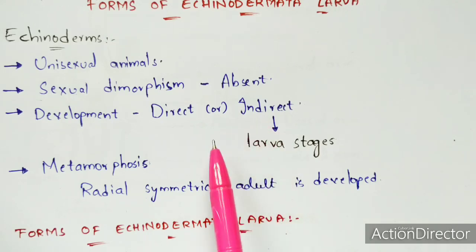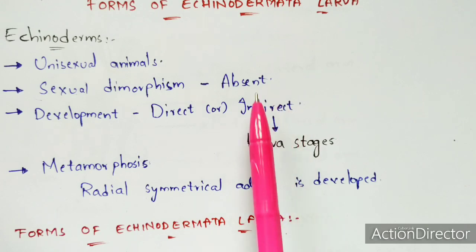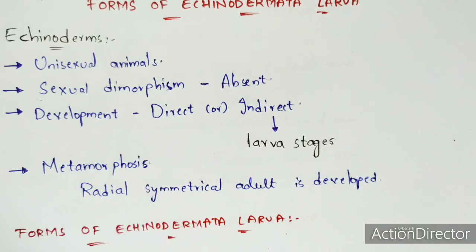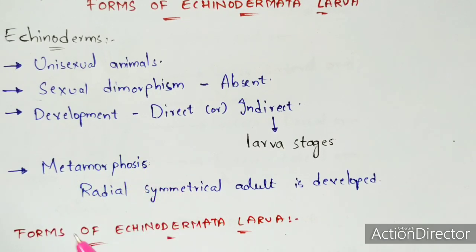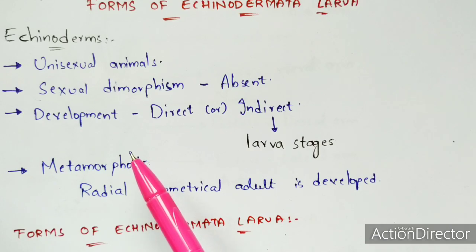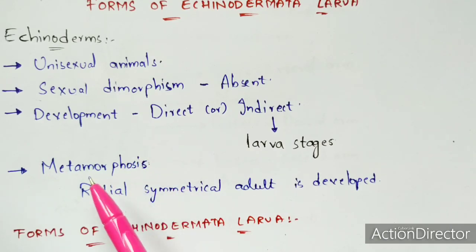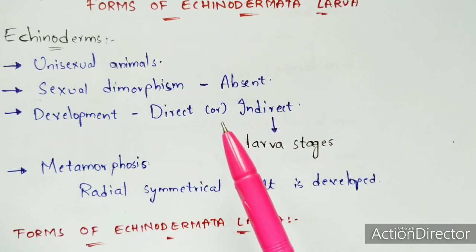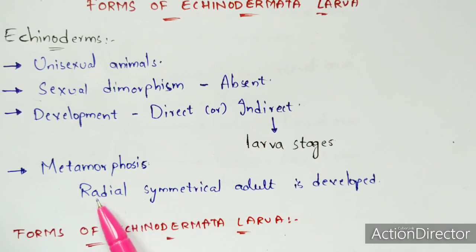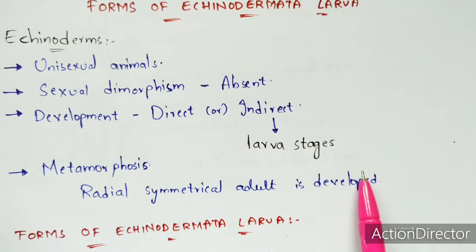The development in Echinoderms may be either direct or indirect. When development is indirect, they exhibit larval stages, and this process is called metamorphosis. Metamorphosis is a life cycle starting from the egg, progressing through larval stages, forming an adult, which then matures and lays eggs, repeating the cycle. After metamorphosis, a radially symmetrical adult is finally developed.